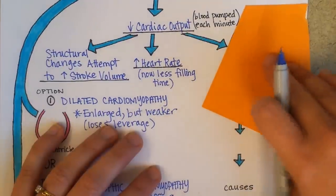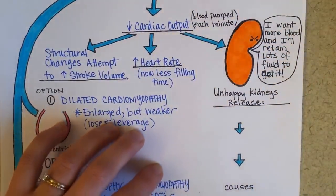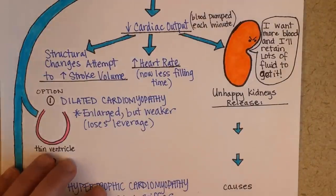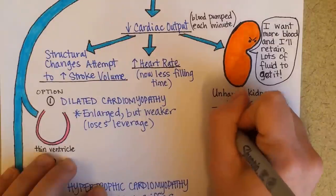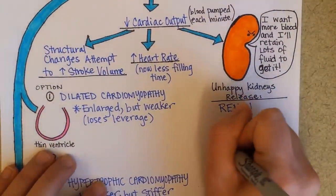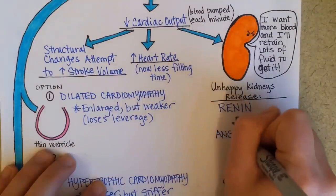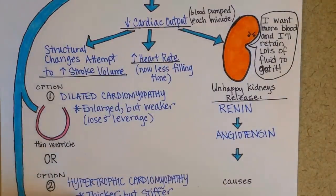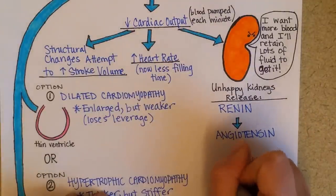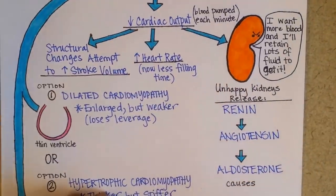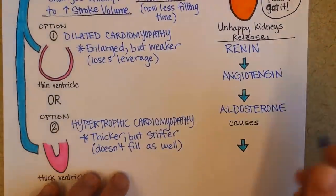Now on to the kidney. The kidney is exquisitely sensitive to drops in cardiac output. It gets grumpy when it doesn't get enough blood. Unhappy kidneys that need more blood will release renin. Renin causes the formation of a hormone called angiotensin. Angiotensin stimulates the release of another hormone called aldosterone. And aldosterone causes salt and water retention.